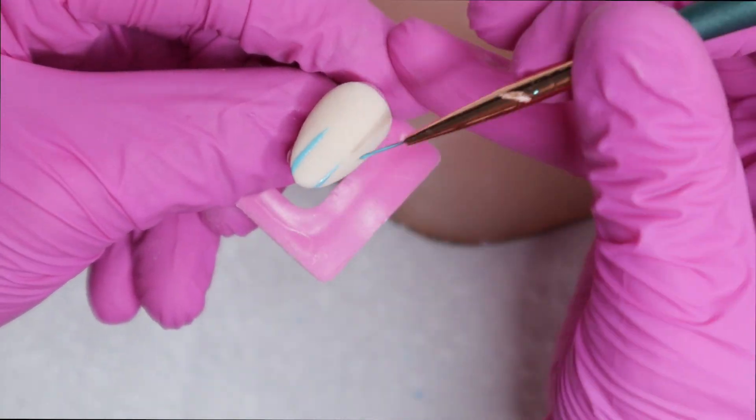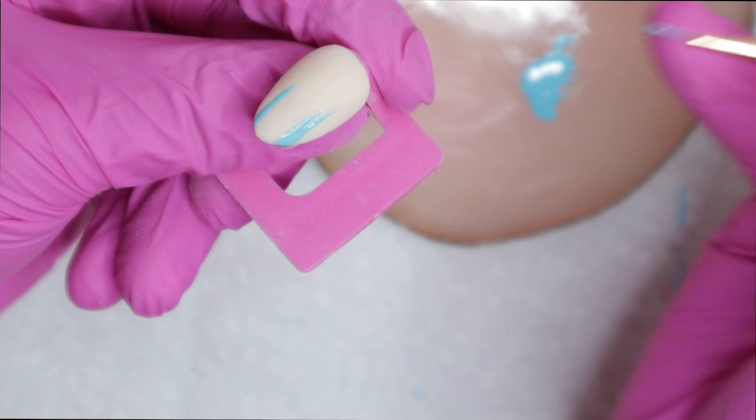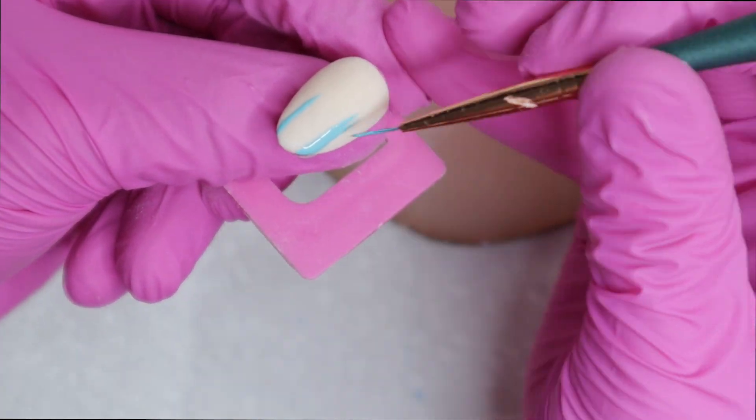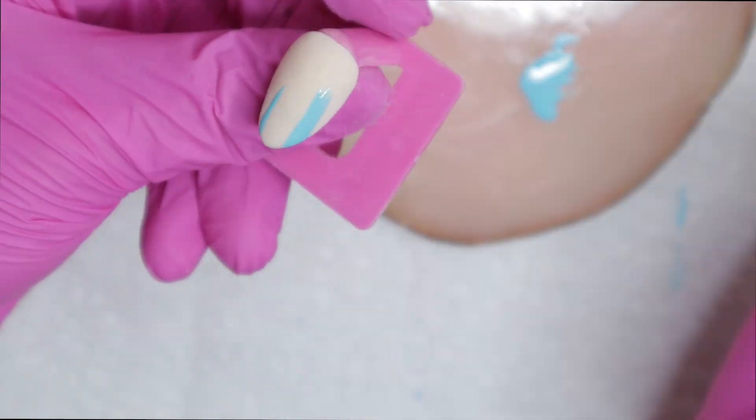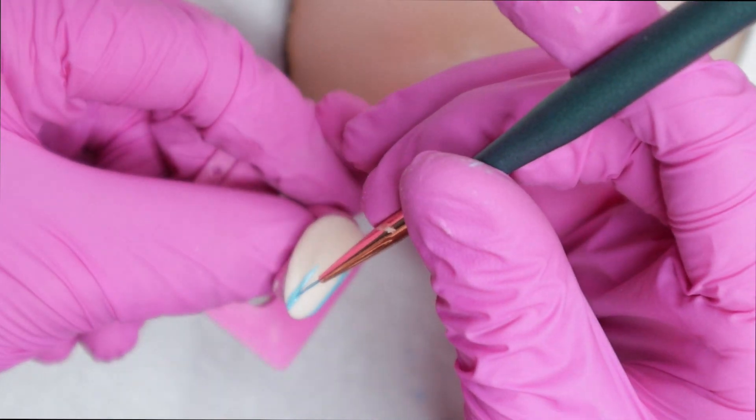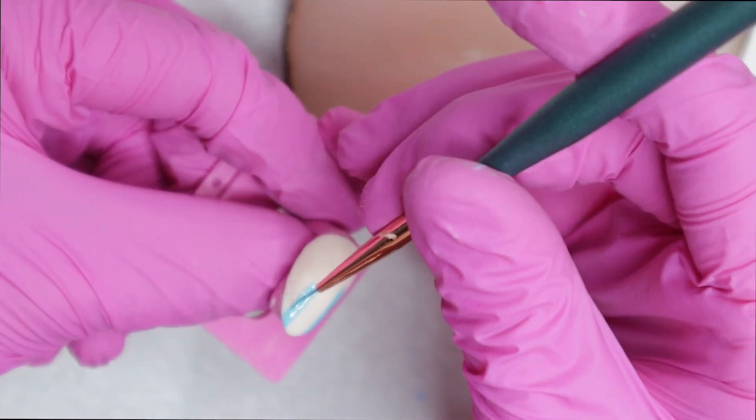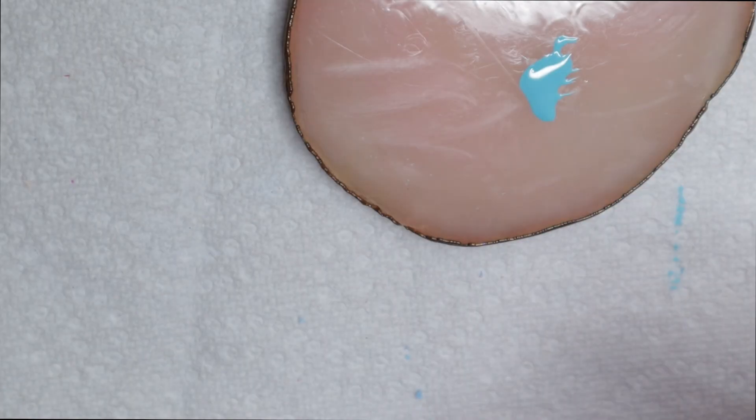And I'm going to repeat the same thing on the other nail. So remember, two of the nails are having nail art done on them. And then when I'm done with the blue lines, I put it in my nail lamp and I let those cure. You can flash cure or fully cure, your choice. It doesn't really matter.